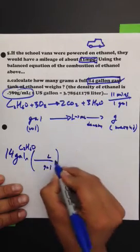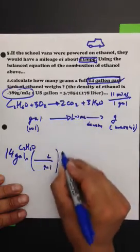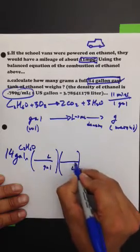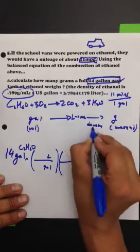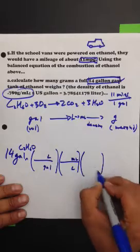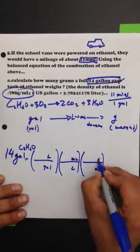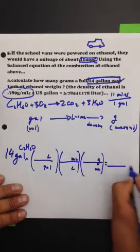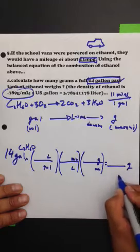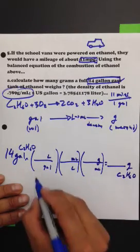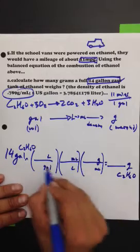So gallon to liter, and then we have to go from liter to milliliter. And then we'll go from milliliter to gram. Okay. And that should give us, in the end, the grams of ethanol, C2H6O. All right. So let's do the conversion factors.